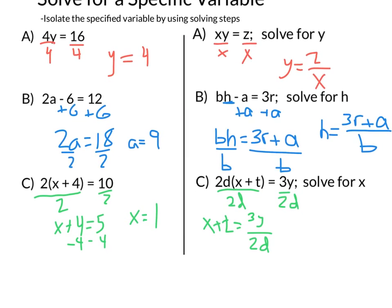Lastly, just like we subtracted this 4 over here, we want to subtract the T. So we'll do minus T minus T. That's going to leave us with a final answer of x equals 3Y over 2D minus T. Just like we had here, 3Y divided by 2D minus T. And there we are.